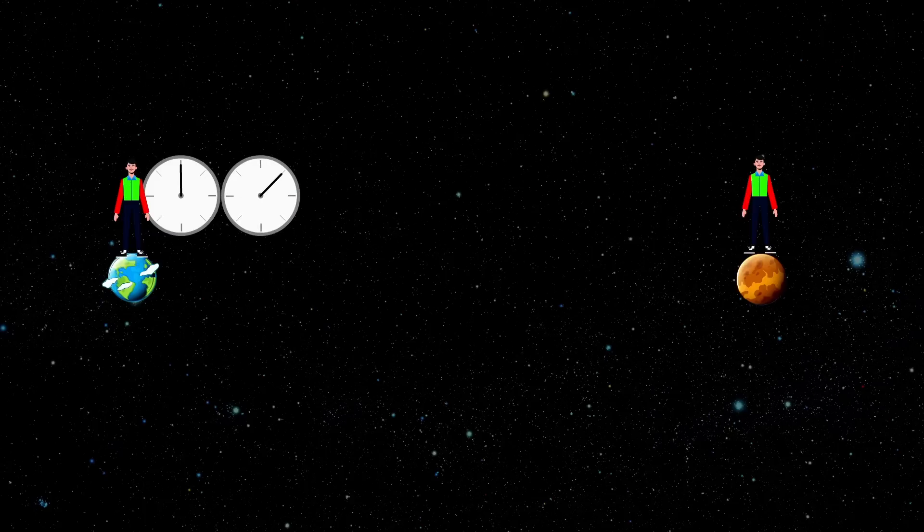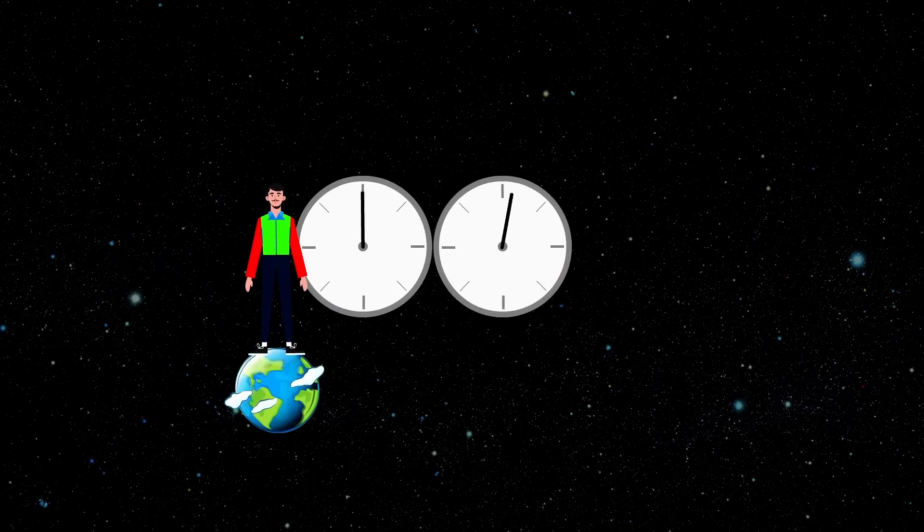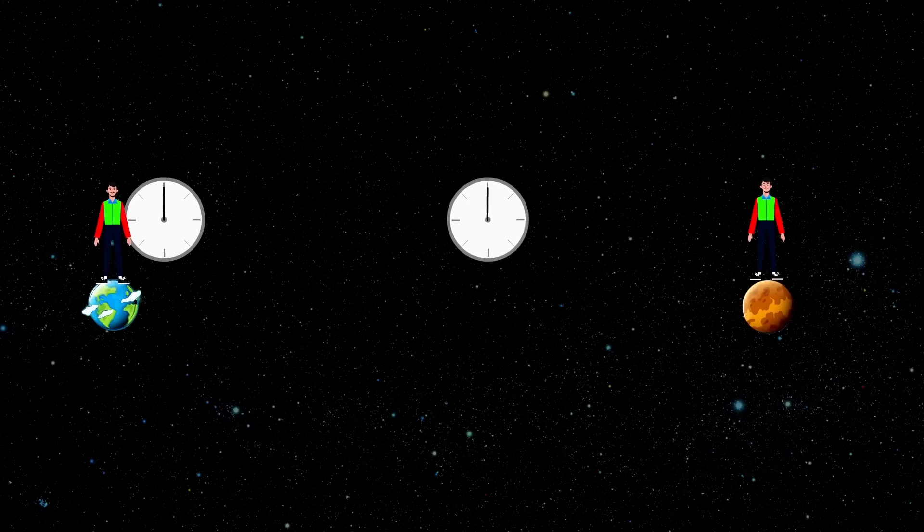We could maybe put them at one position and synchronize them first and then move one to a different location. But then the second clock has to move. And since it's moving, there is time dilation involved. This time dilation depends on the velocity. But maybe if we knew how it depends on the velocity, we could somehow avoid this problem.